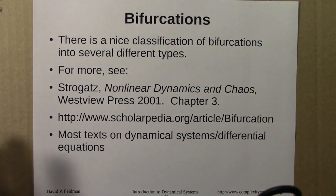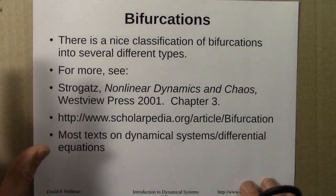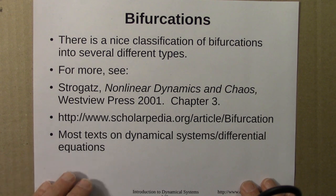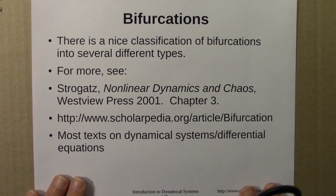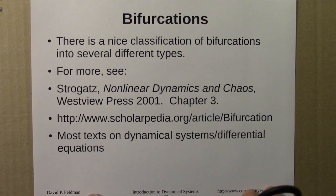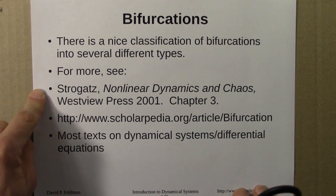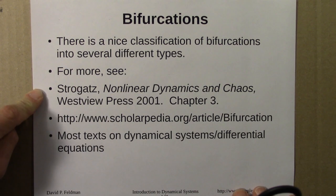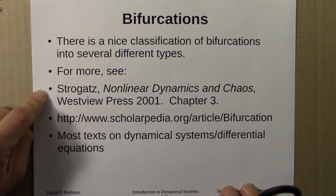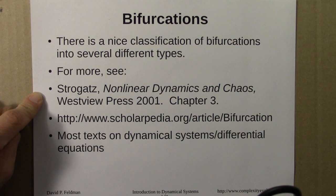Lastly, there's a nice classification of bifurcations into several different types. This is a bit beyond the scope of this course. But if you want to dig deeper, the reference I'd recommend most is chapter 3 of Strogatz's book, Nonlinear Dynamics and Chaos. His entire book is great, and this chapter is really nice—just one or two notches more mathematical than what we're doing in this course.